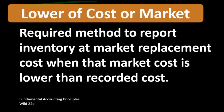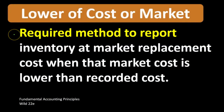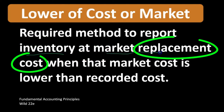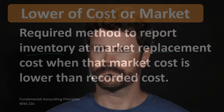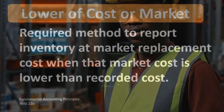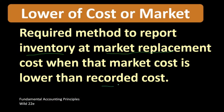The definition of lower of cost or market, according to Fundamental Accounting Principles (Wild, 22nd edition), is a required method to report inventory at market replacement cost when that market cost is lower than recorded cost. What we're saying is that we have to record inventory at the replacement cost when that market cost is lower than what we actually purchased it for. What we're applying here is the conservative principle, meaning that if our inventory has declined in value, we have to record it at the lower cost.